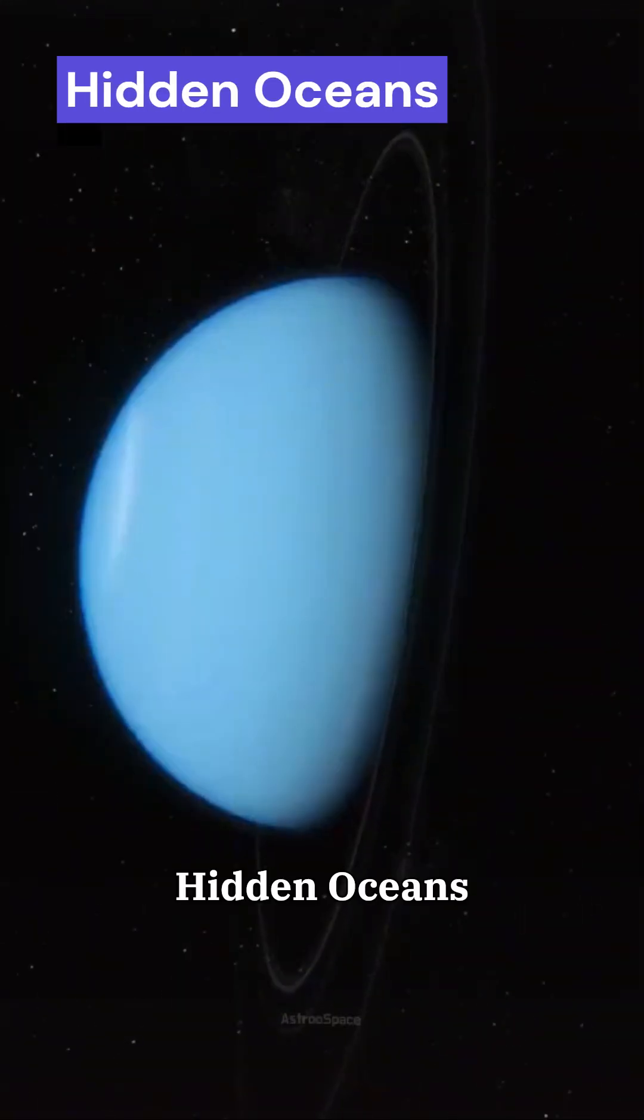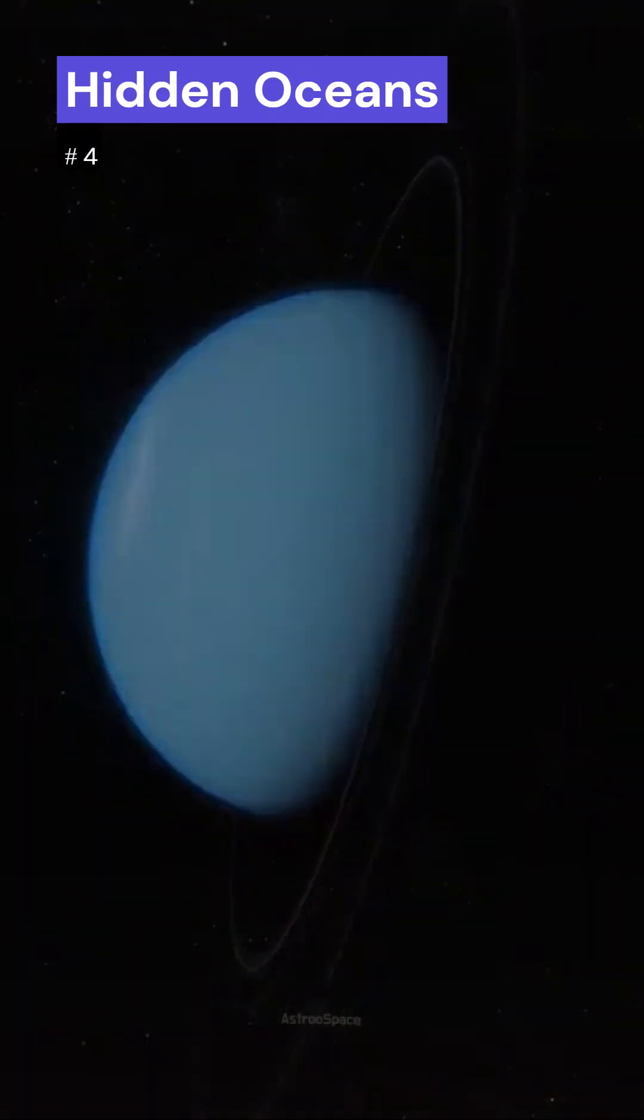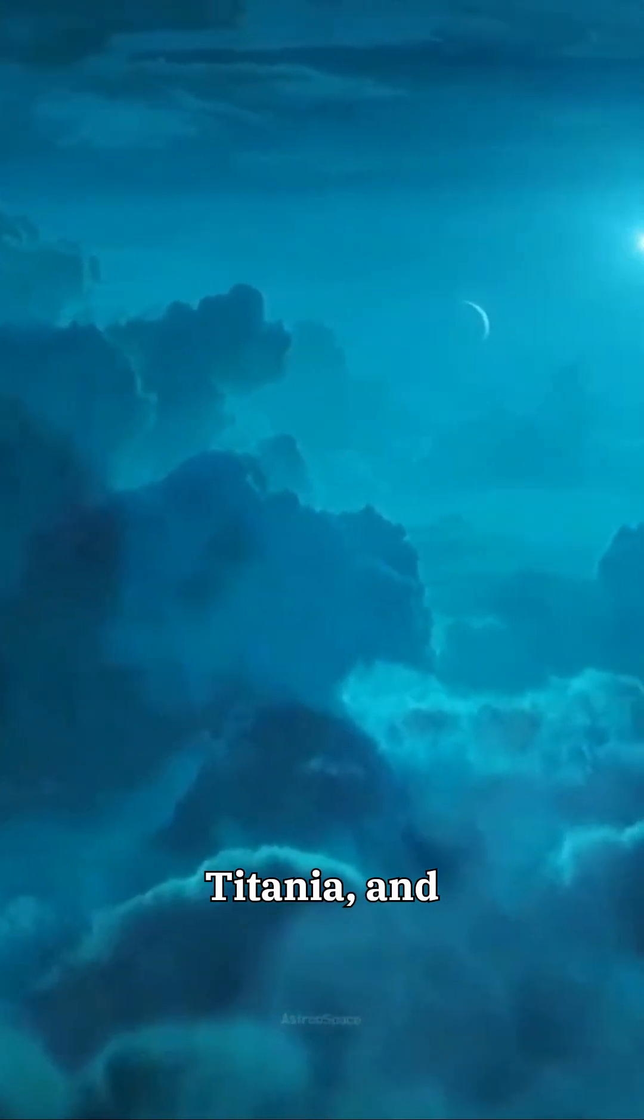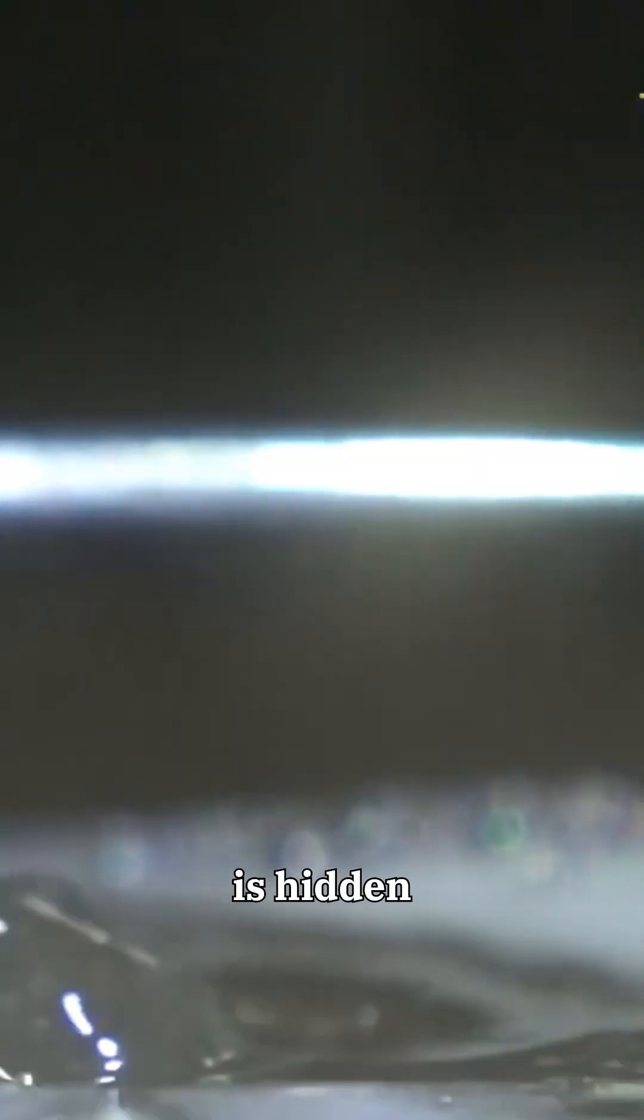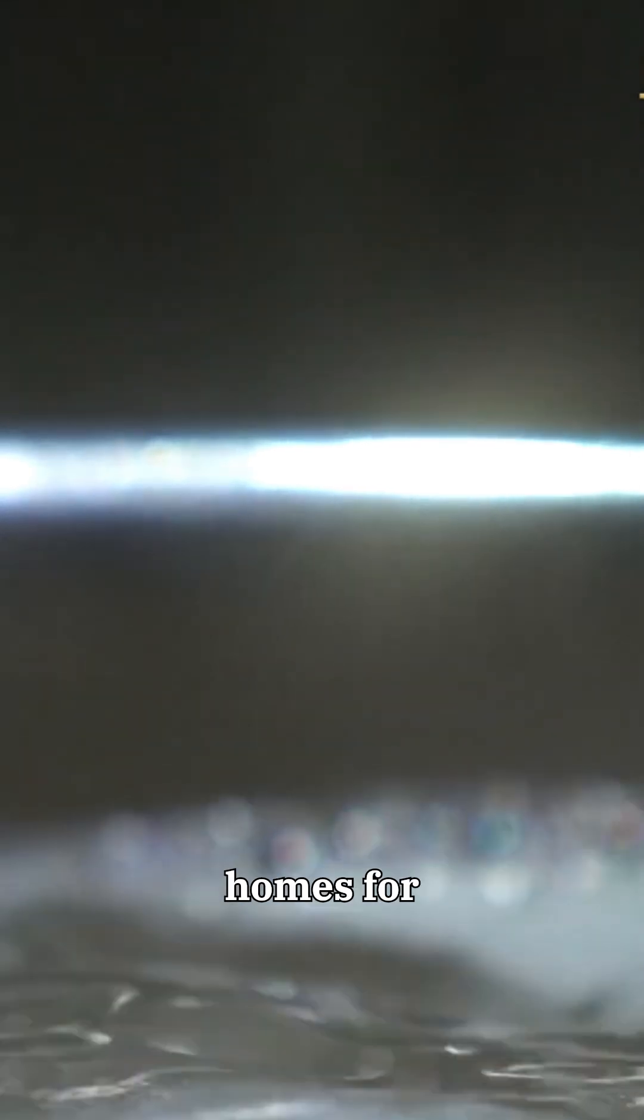Number 4. Hidden oceans beneath Uranus's moons. Four of Uranus's largest moons, Ariel, Umbriel, Titania, and Oberon, may have subsurface oceans beneath their icy crusts. That means liquid water is hidden underground which could be potential homes for alien life.